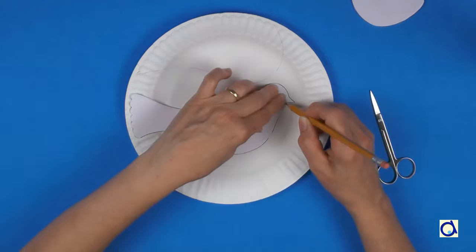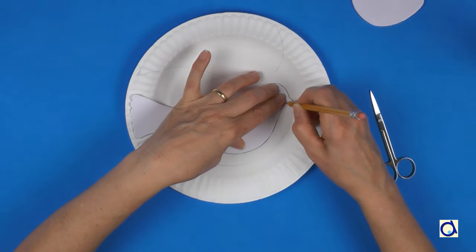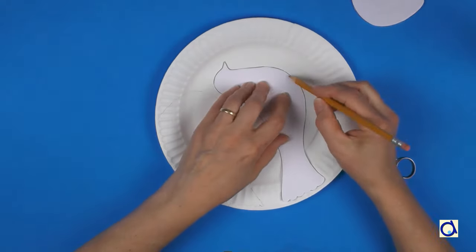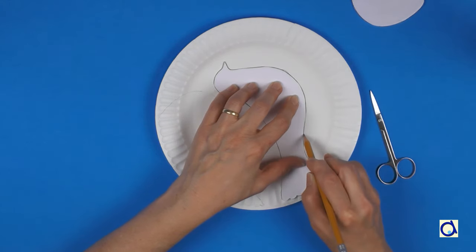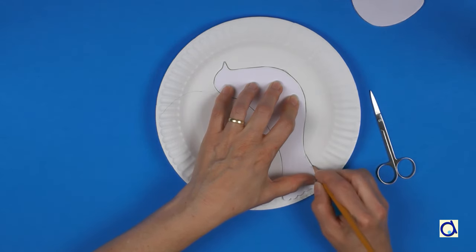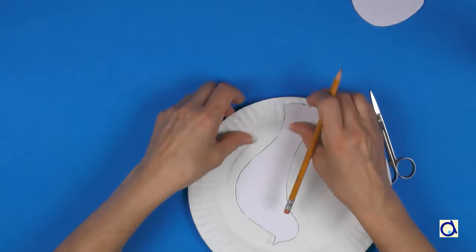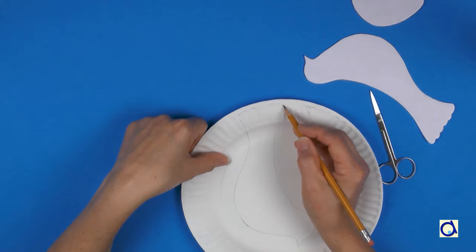The design formed by the border of the plate gives the impression of feathers. Draw the feathers of the wing and the tail following the natural edge of the plate. That will create a good representation of the dove's plumage.